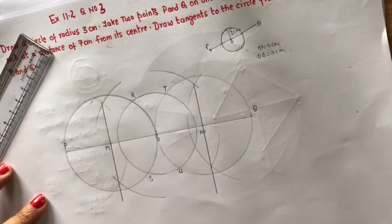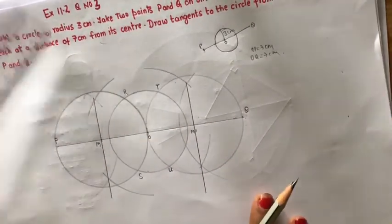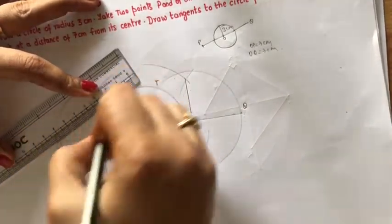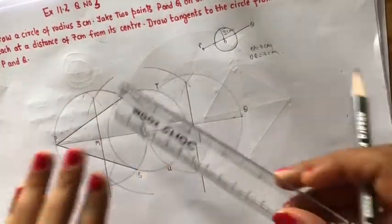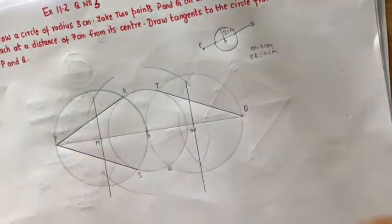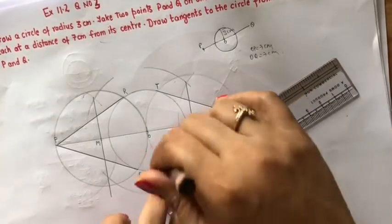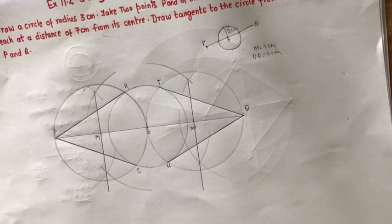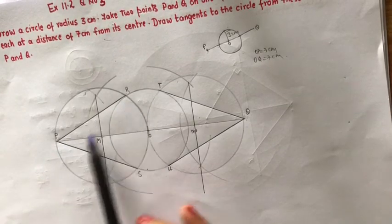So children, PR, PS, QT and QU are the required tangents.